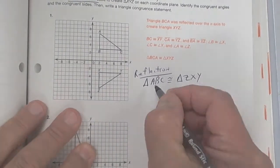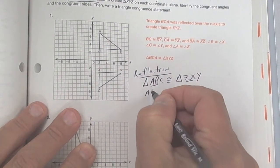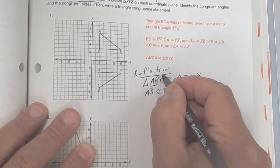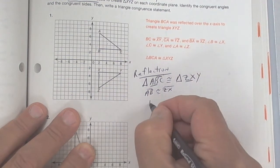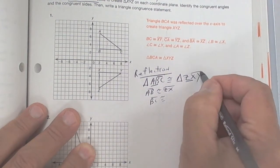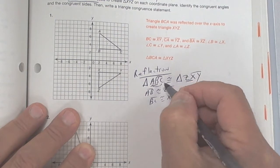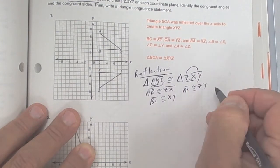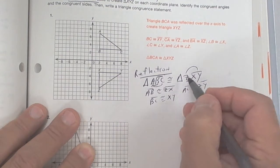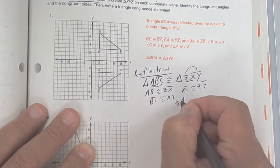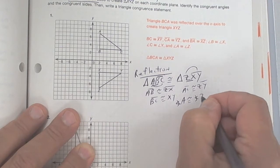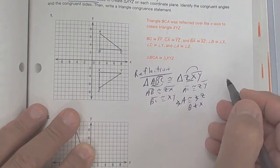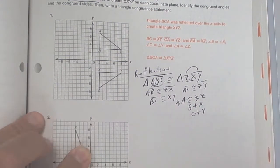To identify congruent sides, take the first two over the first two: segment AB is congruent to ZX. The second two: BC is congruent to XY. First and last: AC is congruent to ZY. For the angles: angle A is congruent to angle Z, angle B is congruent to angle X, and angle C is congruent to angle Y.